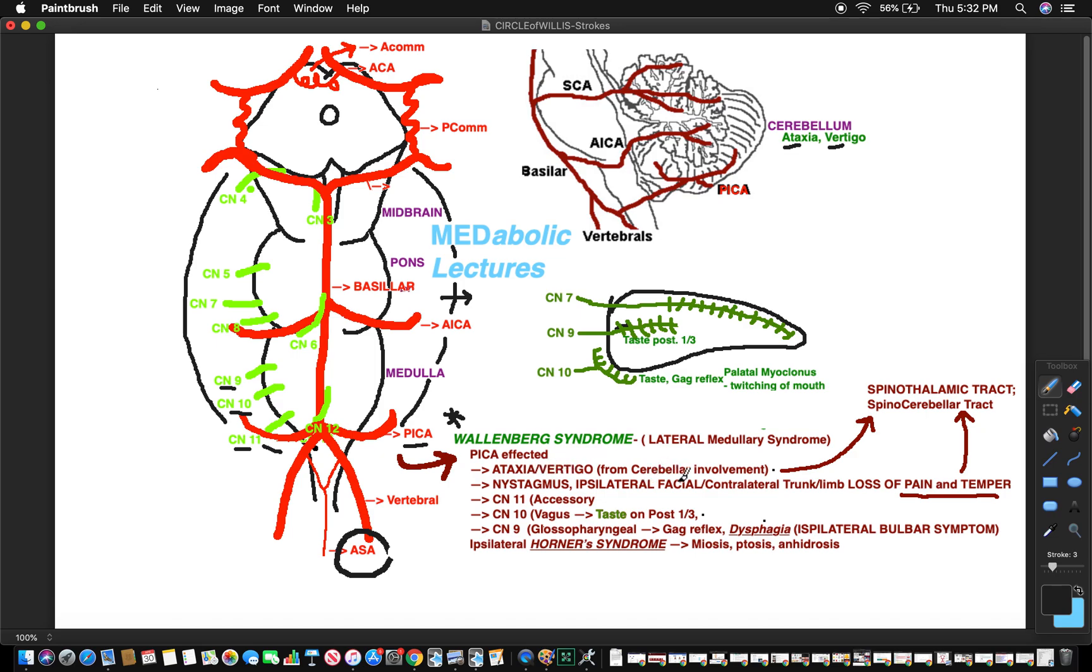What else? Nystagmus, ipsilateral facial and contralateral trunk loss of pain and temperature. Why do you get pain and temperature loss? Think about it. If you don't know now you know - it's because you have spinal thalamic tract involvement.